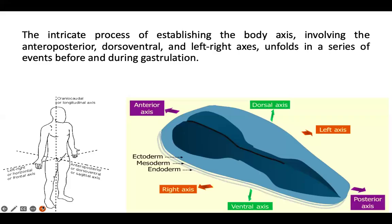The intricate process of establishing the body axis involves the anterior-posterior, dorsal-ventral and left-right axes, which unfolds in a series of events before and during gastrulation.